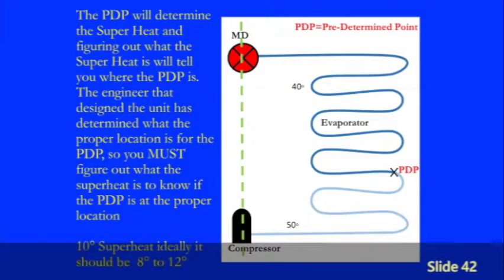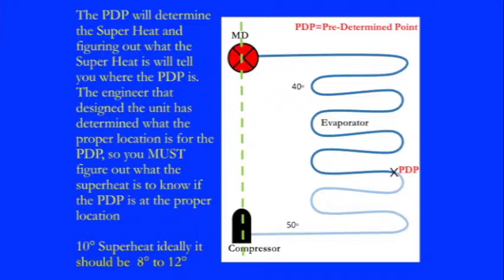Let's look at slide 42. We see the pre-determined point is right there on the coils, where the engineer wants it to be. The pre-determined point determines where the superheat is. If the pre-determined point moves, that's going to change the superheat.